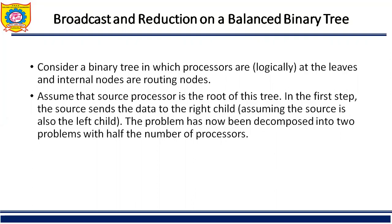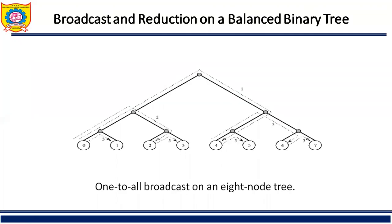Consider the binary tree in which processors are logically at the leaves and internal nodes are routing nodes. Assume the source processor is the root of this tree. In the first step, the source sends the data to its right child, assuming the source is also the left child. The problem is then decomposed into two sub-problems with half the number of processors, illustrating one-to-all broadcast on an eight-node tree.